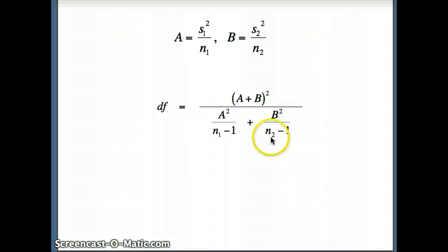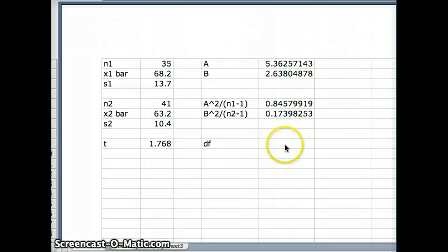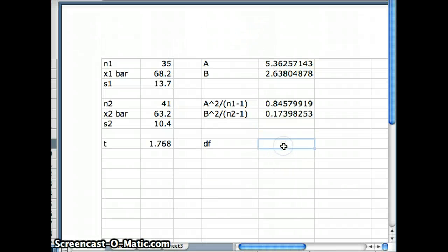Now looking at our formula, I need (a + b)² over a² over (n₁ - 1) plus b² over (n₂ - 1). So we have the two parts of the denominator in separate cells and we will go ahead and write a program to get (a + b)² over the sum of those two.